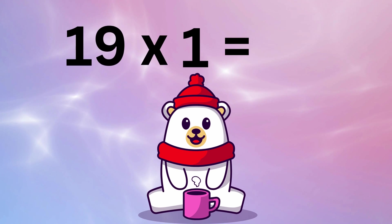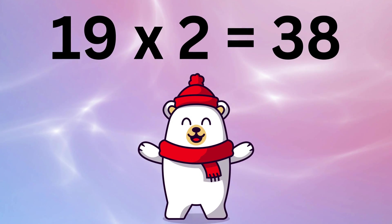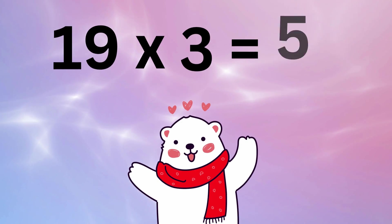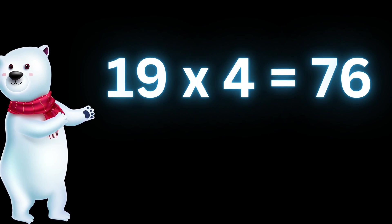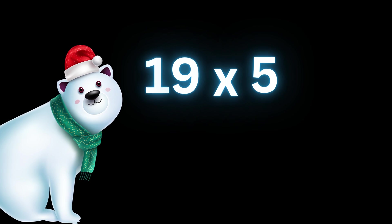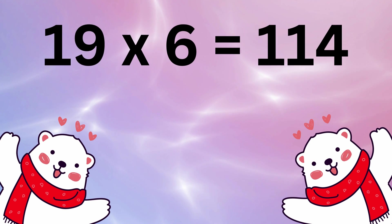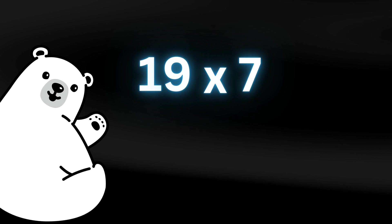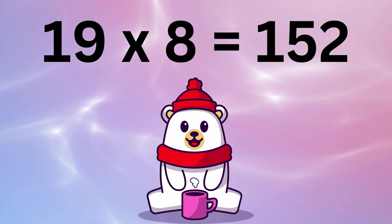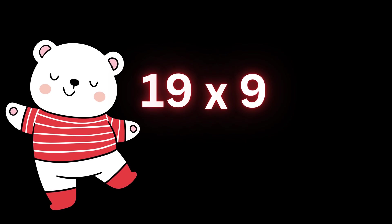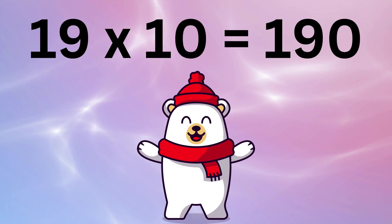Table of nineteen: 19×1 is 19, 19×2 is 38, 19×3 is 57, 19×4 is 76, 19×5 is 95, 19×6 is 114, 19×7 is 133, 19×8 is 152, 19×9 is 171, 19×10 is 190.